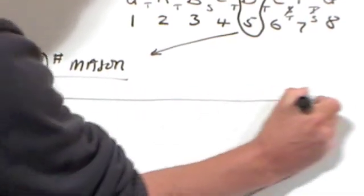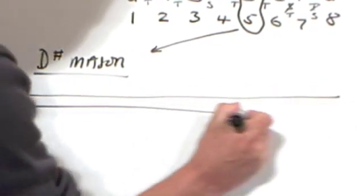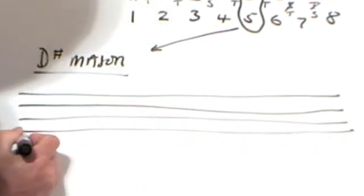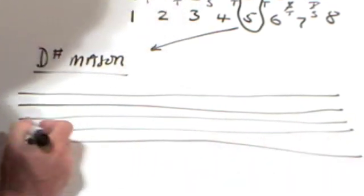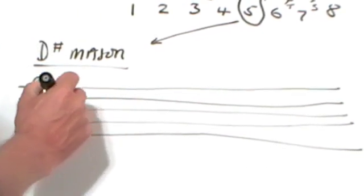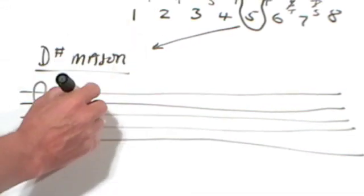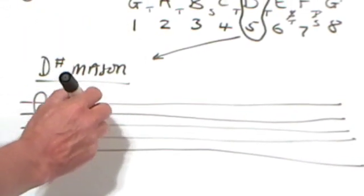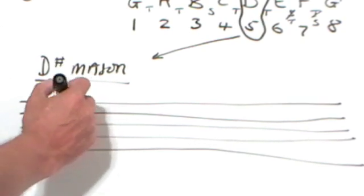So again, let's draw a stave. Double treble clef. We'll keep the key signature we've already got from the previous key, because remember we're always building on the previous key in the circle.